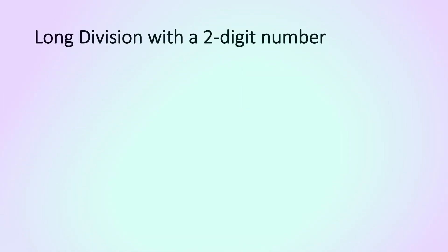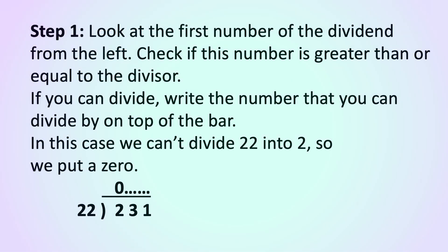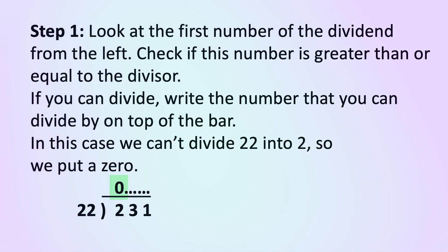Long division with a 2-digit number. Step 1. Look at the first number of the dividend from the left. Check if this number is greater than or equal to the divisor. If you can divide, write the number that you can divide by on top of the bar. In this case we can't divide 22 into 2, so we put a 0.